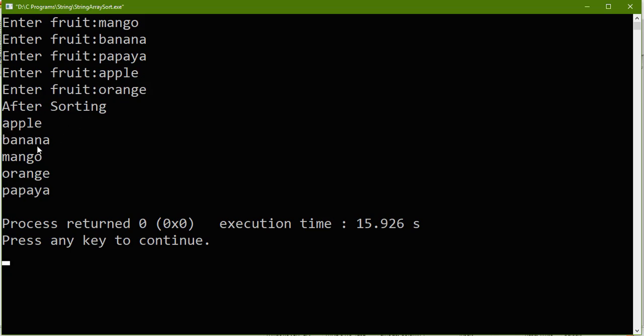See the result! It is in sorted order, in ascending sorted order: apple, banana, mango, orange, and papaya, right? So I hope you enjoyed this video. If you have any doubts or any comments, you can write it in the comment section. Thank you for listening.